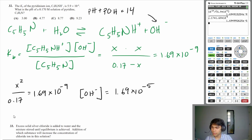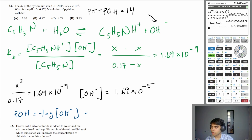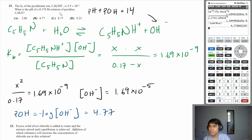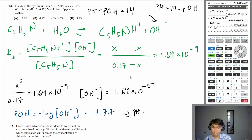From here we can calculate pOH: pOH = −log[OH⁻] = −log(1.69×10⁻⁵) = 4.77. Since pH + pOH = 14, pH equals 14 − 4.77 = 9.23, which is answer choice D.